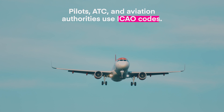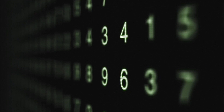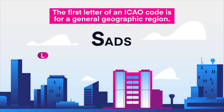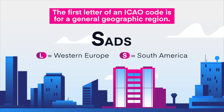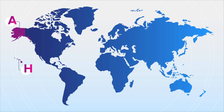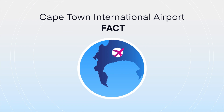Let's take a look at the first type of airport codes: the ICAO code. Pilots, ATC, and aviation authorities use ICAO codes. Each of these codes contains four letters. ICAO doesn't just assign every airport a random four-letter identifier — they have a system. The first letter of the ICAO code represents a general geographic region, such as L for Western Europe or S for South America. In the United States, we use K. The second letter narrows it down further, usually to the country. Some larger countries use the second letter for regions within the country — for example, the U.S. uses H for Hawaii, A for Alaska, or G for Guam. The last two letters identify a specific airport. For example, Cape Town International Airport uses FACT: FA for South Africa and CT for Cape Town. The last two letters usually relate to the city's name, but sometimes reference the airport name instead.